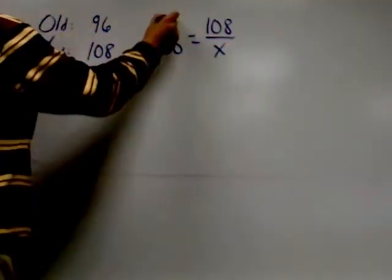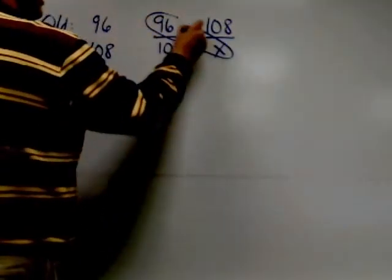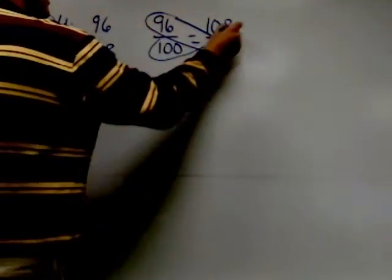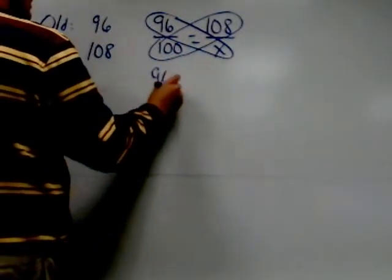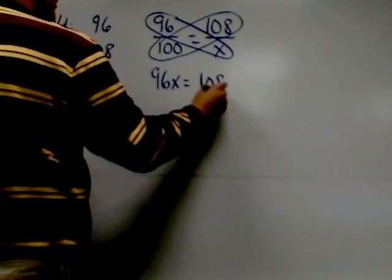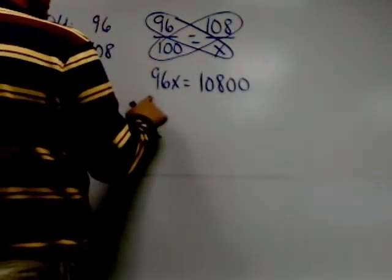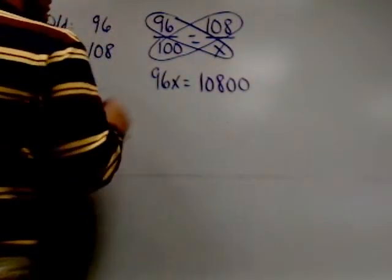I have to cross multiply, which is to multiply on the diagonals, meaning I have to multiply together 96 and x, and 108 and 100, which gives me 96x and 10,800.